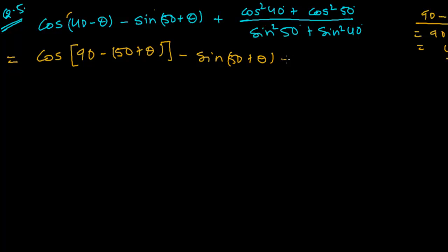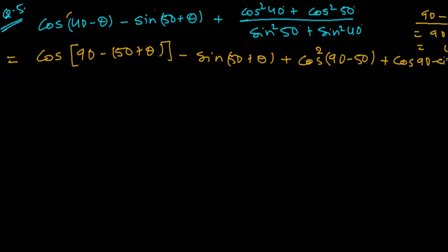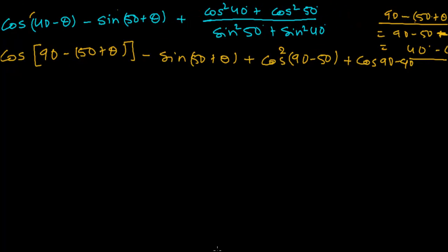Next I have to change cos squared 40 and cos squared 50 into sin form. Cos squared 40 can be written as cos squared(90 minus 50), since 90 minus 50 is 40. And cos squared 50 can be written as cos squared(90 minus 40).